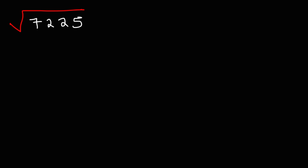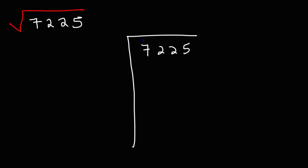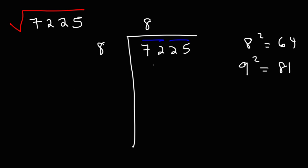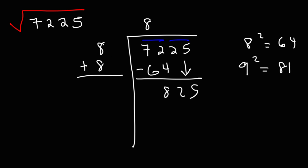Let's try another example so you can master this topic. Find the square root of 7,225. Let's begin by rewriting the problem and breaking the 4 numbers into pairs of 2. What perfect square is just under 72? We know that 8 squared is 64 and 9 squared is 81. 81 exceeds 72, so we're going to use 64. 8 times 8 is 64. Subtracting 72 by 64 gives us 8, and then we bring down the 25. So we have 825. Now let's add 8 to 8, which gives us 16, and put a box.